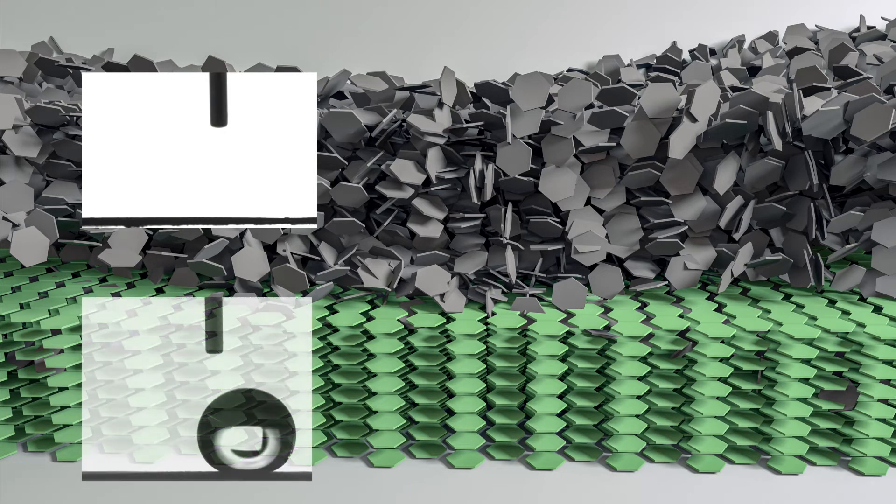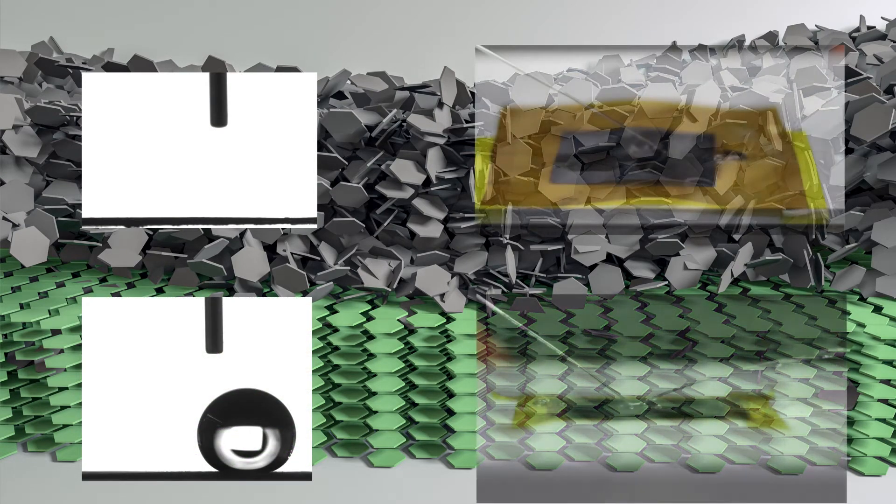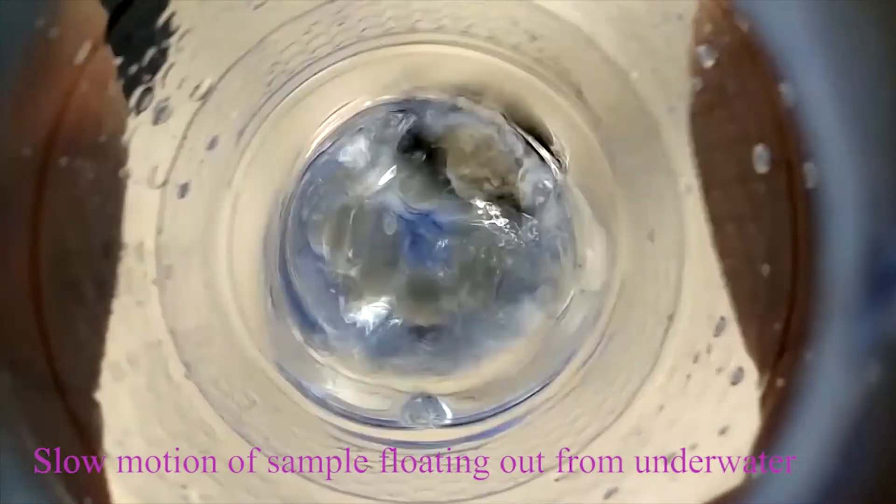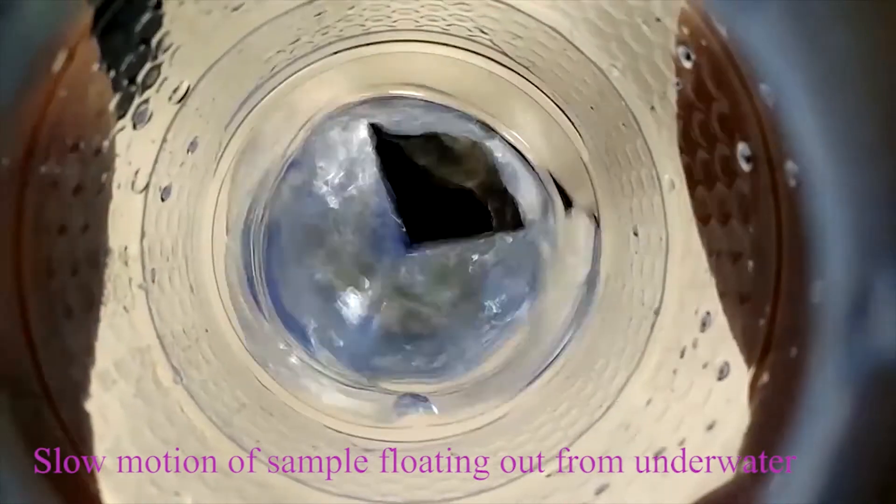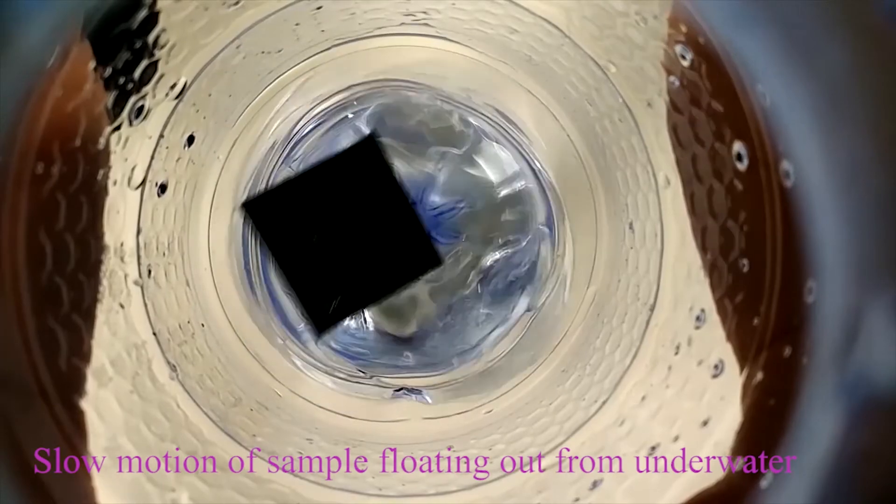The top layer is super wetting, and the bottom layer is not wetting at all. When the film is placed on the water surface, it attaches to the water firmly. Even if it is brought below the water, it can still turn back over onto the water surface, so it can steadily float on real ocean surfaces.